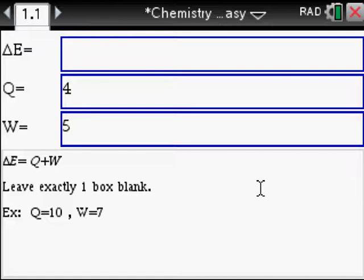And this right here, this is the internal heat equation. So the triangle basically means change and E means energy. So change of energy, heat is Q and work is W.